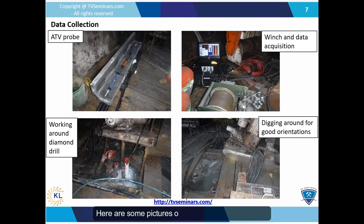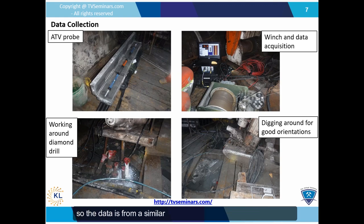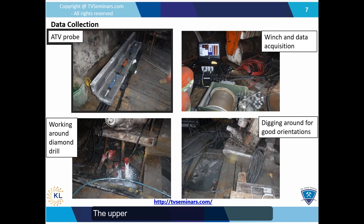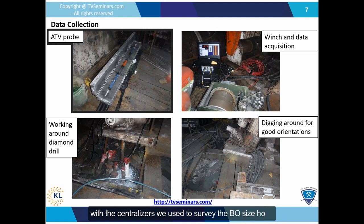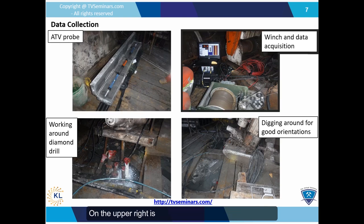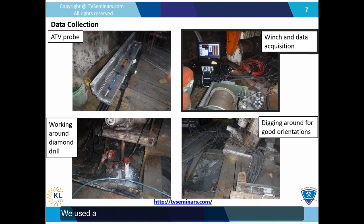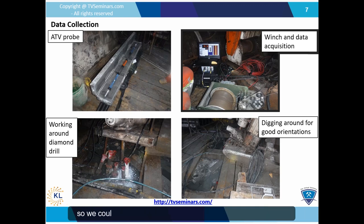Here are some pictures of the data collection process. We worked in two diamond drill bays on the 5,300 level, so the data is from a similar depth as the over-coring measurements. The upper left is the acoustic televiewer, or ATV probe, with the centralizers we used to survey the BQ size holes. On the upper right is the winch and data acquisition system. We used a single winch setup because all the holes were steeper than 40 degrees, so we could rely on gravity to pull the probe to the end of the hole.